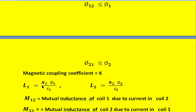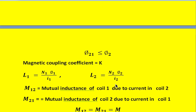The self inductance of L1 is equal to N1 times phi1 divided by I1, where N1 is the number of turns on coil 1, I1 is the current flowing in coil 1, and phi1 is the total flux produced by I1 in coil 1. Similarly, the self inductance of coil 2 can be written as N2 times phi2 divided by I2, where phi2 is produced by current I2 in coil 2, and N2 is the number of turns on coil 2.